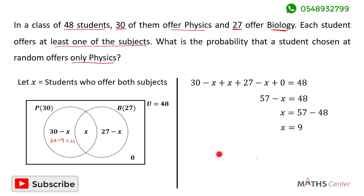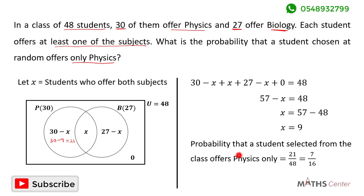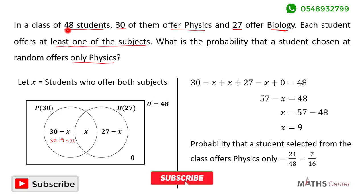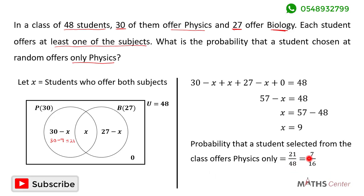The probability that a student selected at random from the class offers physics only is equal to the number of students who offer physics only, which is 21, divided by the total number of students in the class, which is 48. This gives us 7 divided by 16.